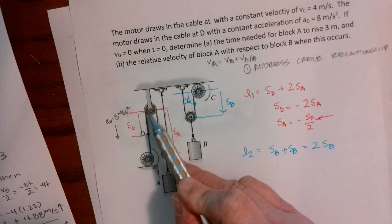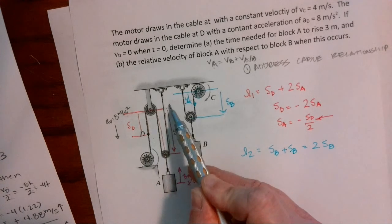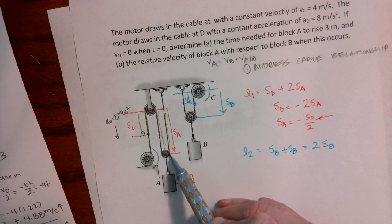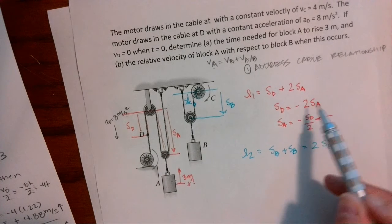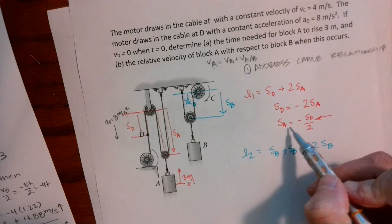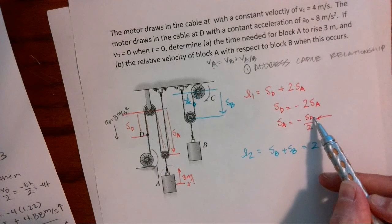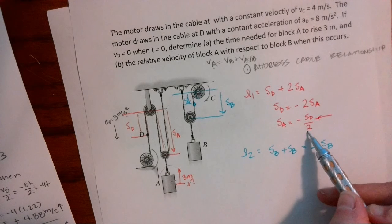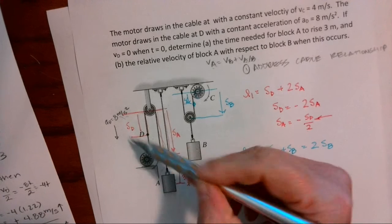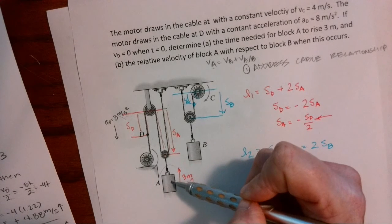I drew my datum through here. I picked a random point on my cable that's going into the motor and I traced around. So I have SD plus two SA. And then I rewrote this so SA equals negative SD over two. So if this is pulling at eight meters per second, this should be pulling at four.